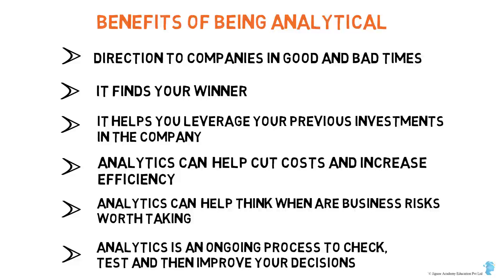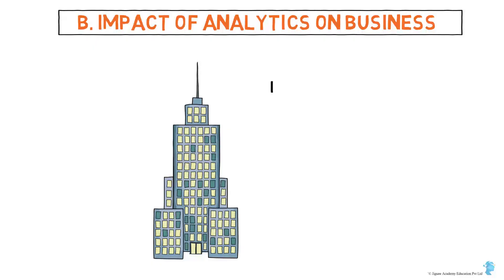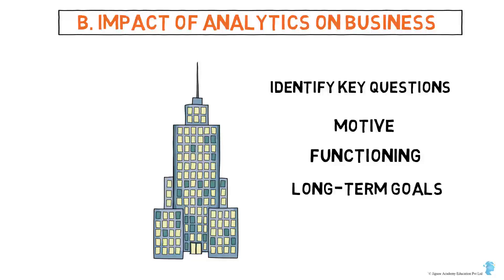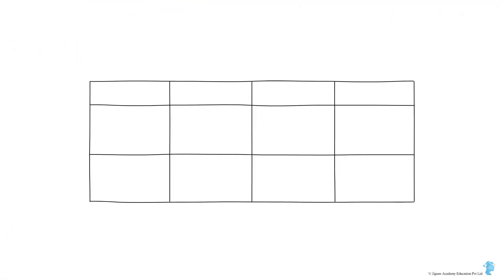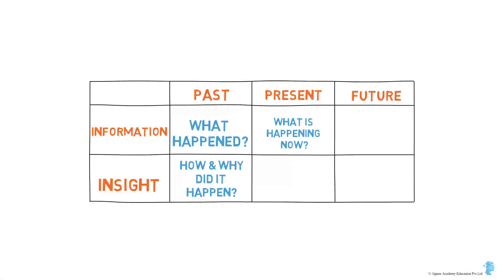Analytics is an ongoing process, and because of its continuous nature you have a clear basis to check, test, and improve your decisions based on their impact. Any organization should be able to identify key questions about its motive, its functioning, and its long-term goals. Using a two-dimensional conceptual approach — information and insight — we can identify key questions analytics can help answer: past (what happened / how and why did it happen), present (what is happening now / what's the next best action), and future (what will happen / what's the best or worst case situation).